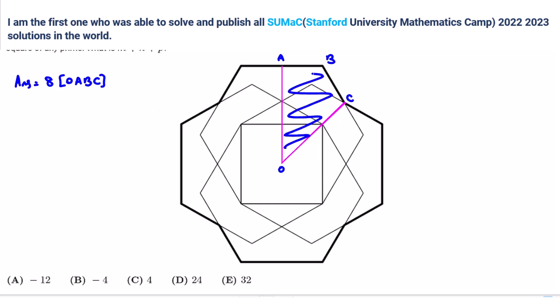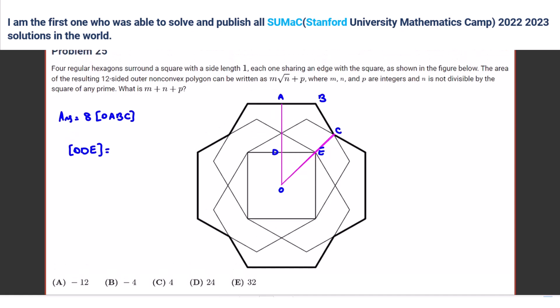Now I want to split this area into different parts. One part is triangle ODE. The area of ODE — the sides are one half, that is one half, that also should be one half. So it's one half times one half, which gives us one eighth.